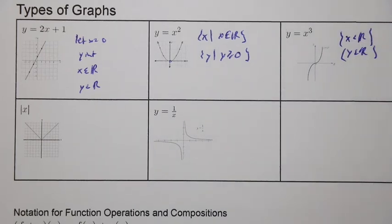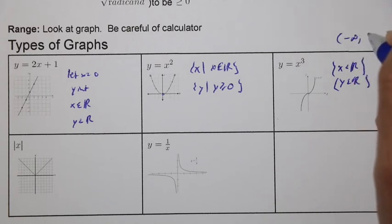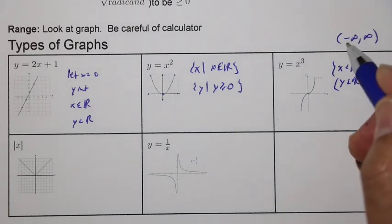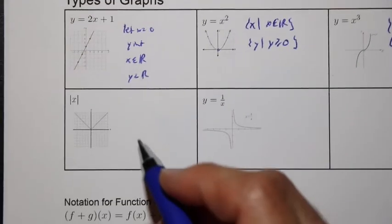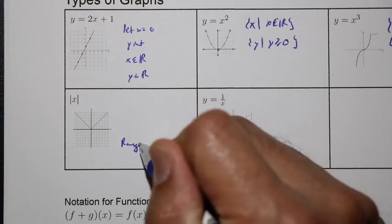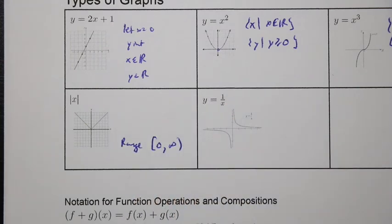Remember when we're talking about set-builder notation or interval notation, interval notation will look something like this. Open brackets if you're not including the boundary point. Another case here when we talk about this one, we talked about the range. We could say that it includes zero and goes to positive infinity.